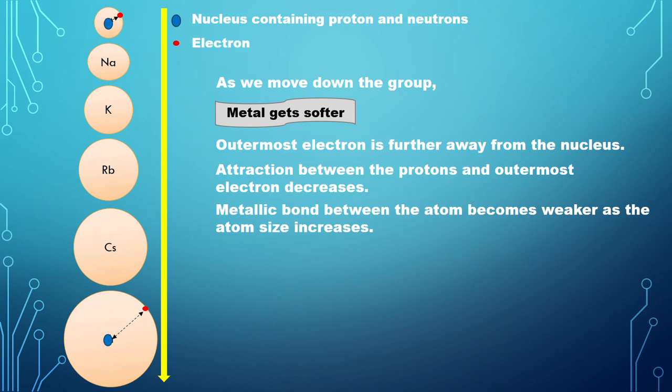Additionally, as we move down the group, the elements become more reactive. This is because the valence electron in the outermost shell gets further away from the nucleus and it is easier for the atom to release an electron for reactions to take place.